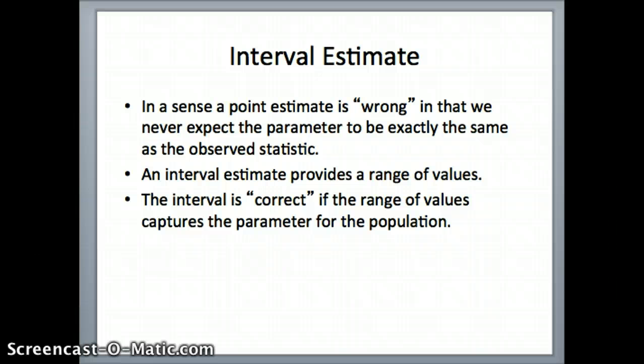But x-bar and mu are never going to be the same, or virtually never going to be the same. So for that reason, we say that the point estimate is wrong. It's not exactly the same. So what we do instead is we provide an interval estimate, a range of values. We do not know what mu is, but we hope that it is within some range. So we're going to construct an interval, a low point to a high point, that we hope will capture the overall population mean mu.